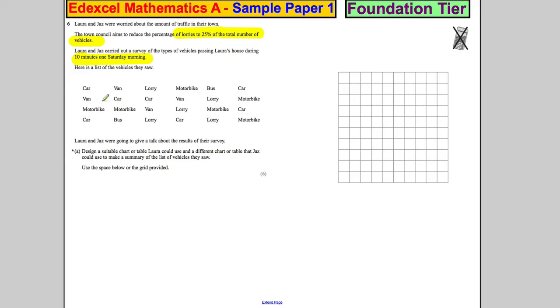They saw cars, vans, motorbikes, and so on. Laura and Jazz were going to give a talk about the results of their survey. Design a suitable chart or table Laura could use and a different chart or table that Jazz could use to make a summary of what they saw. Use the space below provided.